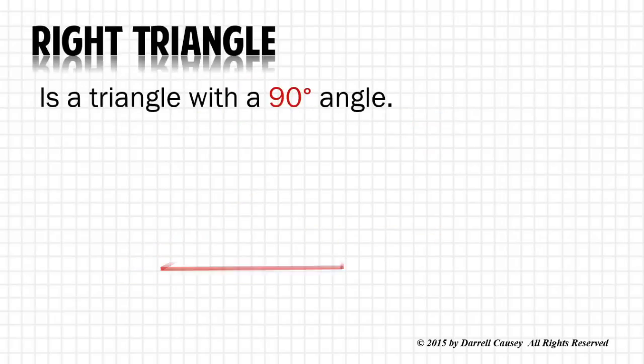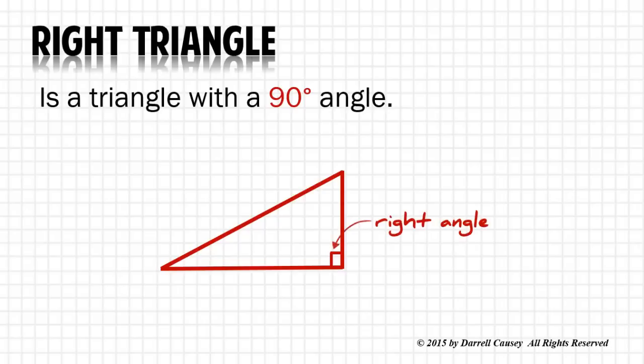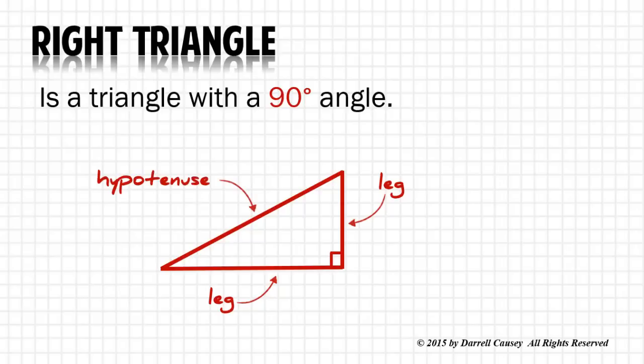You remember a right triangle is a triangle with a 90 degree angle. We call the two sides legs and the side opposite the right angle is the hypotenuse.